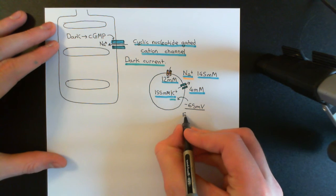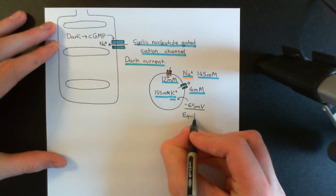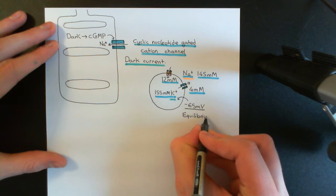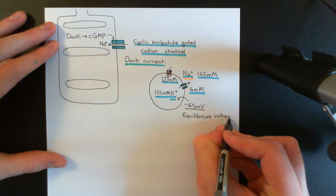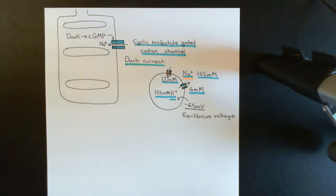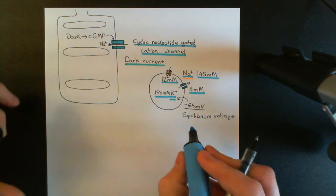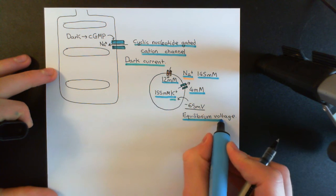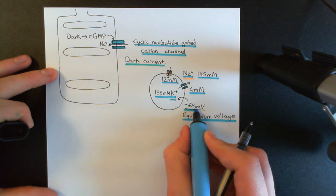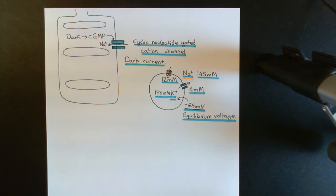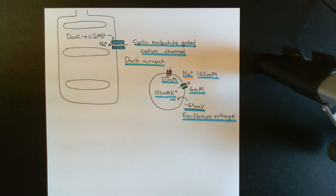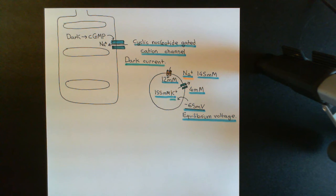Hence why we call this either the resting electrical potential difference, or the equilibrium electrical potential difference — another word for electrical potential difference is voltage. So this is the equilibrium voltage to have across the cell membrane, where the movement of sodium ions in will equal the movements of potassium ions out. Now of course that means that the electrical potentials are in equilibrium. The actual movement of charged particles at equilibrium — what is not at equilibrium is the ionic movements.